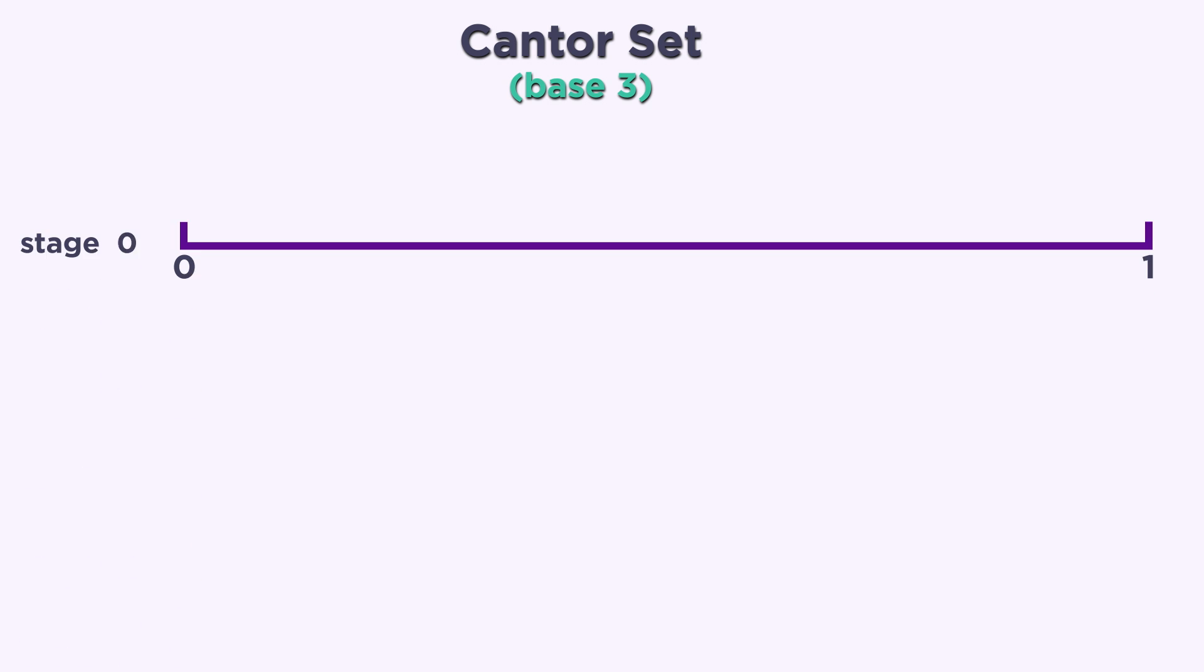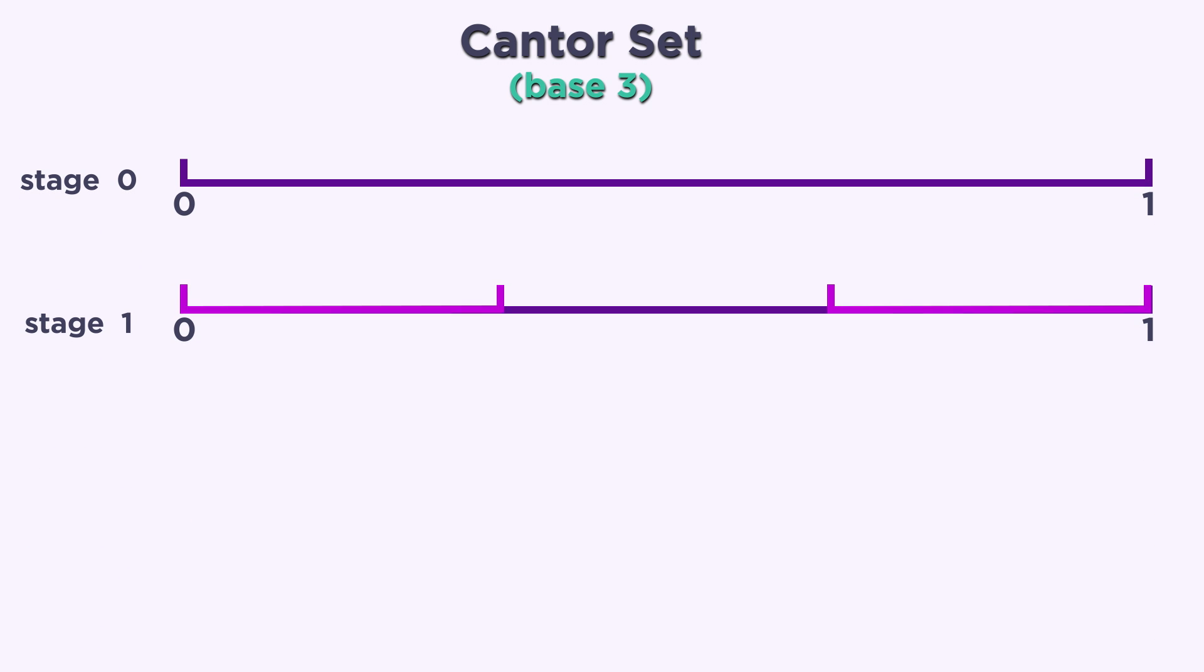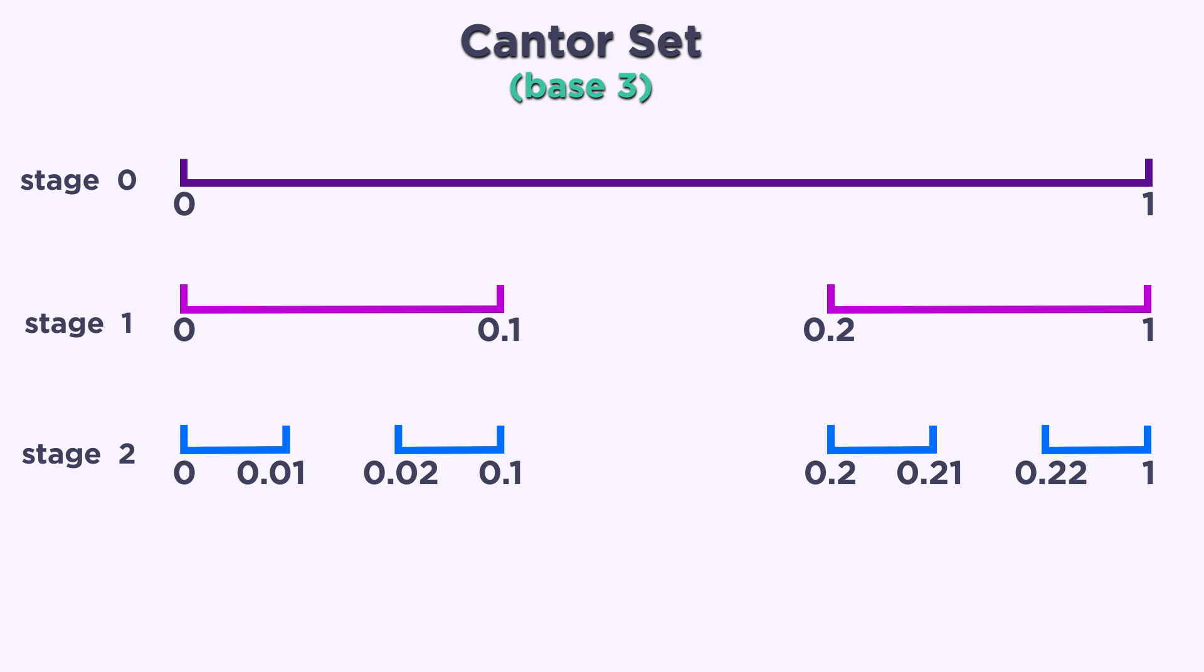Back to the Cantor set. Let's look at the set in base 3 as we go through the stages of the construction of the Cantor set. At stage 0, we have the whole interval. At stage 1, we remove the middle third, which are all the numbers with a 1 in the first place after the decimal. At stage 2, we remove the next middle thirds, which are all the numbers with a 1 in the second place after the decimal. At stage 3, we remove all the numbers with a 1 in the third place after the decimal.